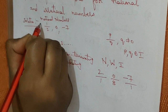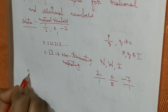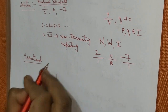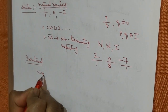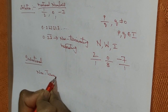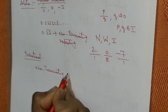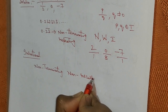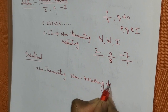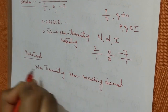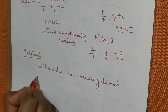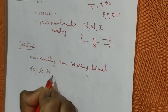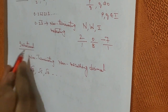Now let us give examples for irrational numbers. What are irrational numbers? Irrational numbers are numbers which are non-terminating and non-repeating, or non-recurring decimals. The square roots like root 3, root 5, root 7, and so on are examples of irrational numbers.